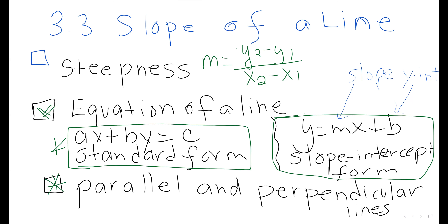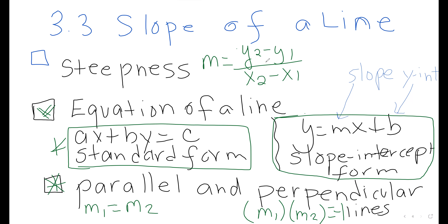Third, parallel and perpendicular lines. Parallel lines have the same slope. For perpendicular lines, when you multiply slope 1 by slope 2, the result equals negative 1. The subscripts simply distinguish the first and second slopes, just as x₁, y₁ and x₂, y₂ distinguish the first and second points. These are the three items I'll go through in the workbook with examples.